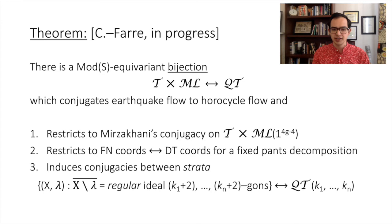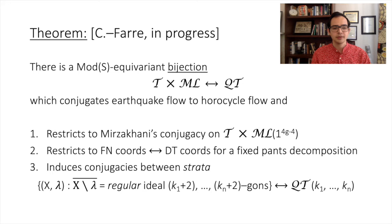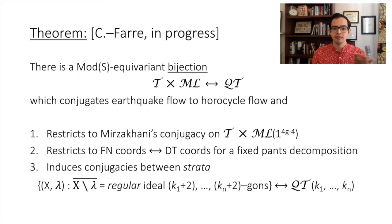Our main theorem does just that. What James and I show is that there is a mapping-class-group equivariant bijection between Teichmüller space times measured laminations (the hyperbolic side) and the bundle of non-zero quadratic differentials (the flat side), which extends Mirzakhani's conjugacy between the earthquake and horocycle flows. Moreover, for a fixed pants decomposition, our map takes hyperbolic to flat twisting — exactly as we've seen. Finally, it also induces conjugacies on interesting subvarieties: specifically, it takes strata of quadratic differentials to the set of pairs (x, λ) where λ cuts x into regular ideal polygons with a specified number of sides. A natural question is: why don't we just complete each lamination to make it maximal and then apply Mirzakhani's map? This gives a map from the hyperbolic to the flat side, but it can no longer be equivariant by the mapping class group due to the choices of completions — so the resulting map can't descend to the level of moduli space, and depending on your choices, may not even be a bijection.